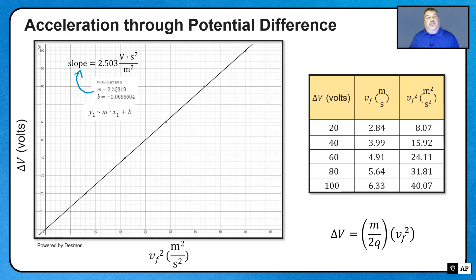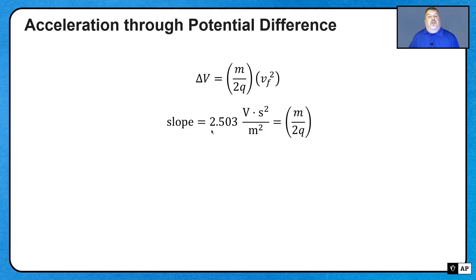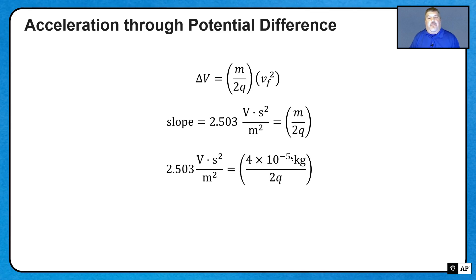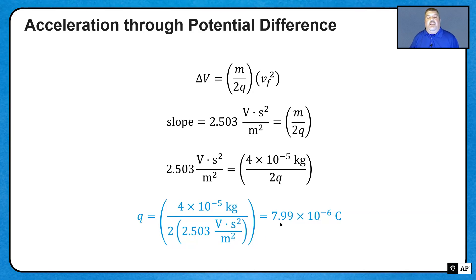Now we use that slope to figure out the unknown charge. The slope equals the mass divided by two times the charge, so 2.503 volt·second squared per meter squared equals 4 times 10 to the negative 5 kilograms divided by 2q. Solving for q, we have the mass divided by 2 times the slope: 4 times 10 to the negative 5 kilograms divided by 2 times 2.503, giving a charge of 7.99 times 10 to the negative 6 coulombs.